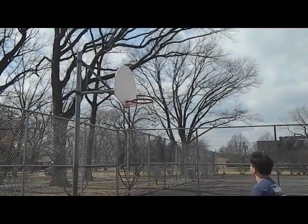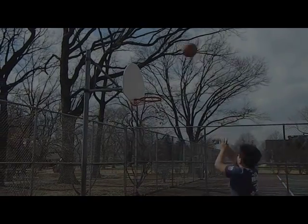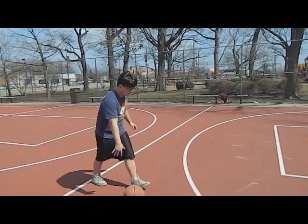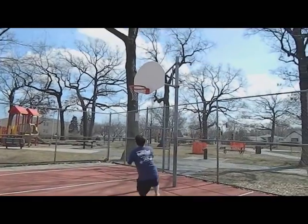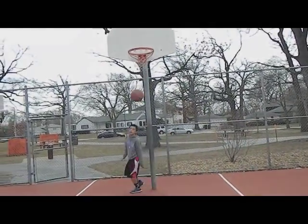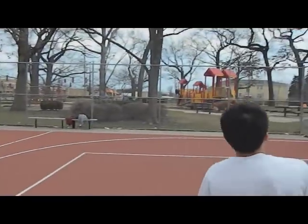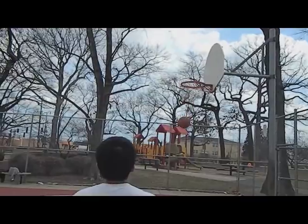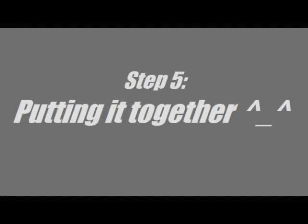Another way to ensure your shot goes in is to use the backboard. You can use the backboard on both jump shots and layups. By using the backboard, you are creating an elastic collision between the ball and the backboard. This collision creates angles at which the ball will bounce off and into the hoop. The angle at which you shoot the ball is also the angle at which the ball will bounce off the backboard. Therefore, it is important not to overshoot or undershoot, because it will cause the ball to bounce off the backboard too hard or too soft. Now you understand the physics of basketball.